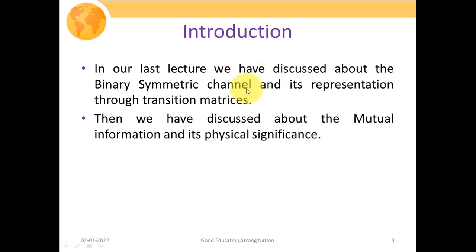In our last lecture, we discussed the binary symmetric channel and its representation through transition matrices — specifically that in a binary symmetric channel, the error probabilities when transmitting zero and receiving one, or transmitting one and receiving zero, are both the same. That is why the term symmetric comes into picture. We also discussed mutual information and its physical significance: it is the information transferred from source to destination, and we want it to be as maximum as possible.